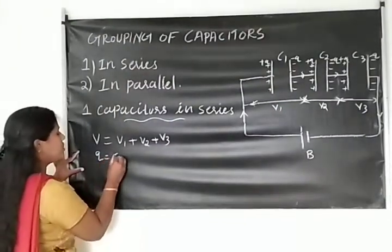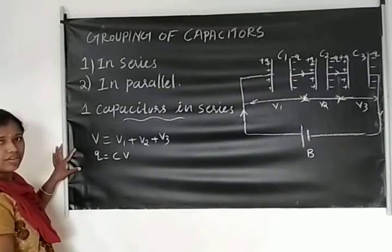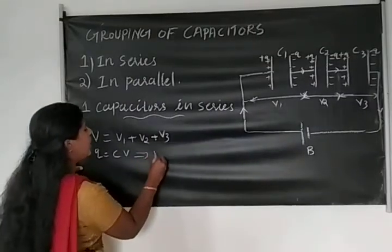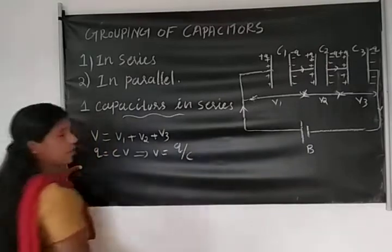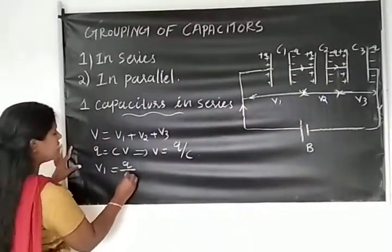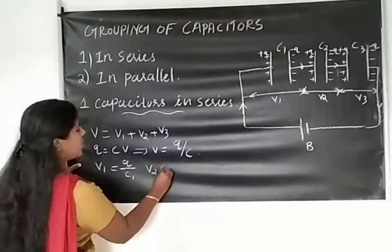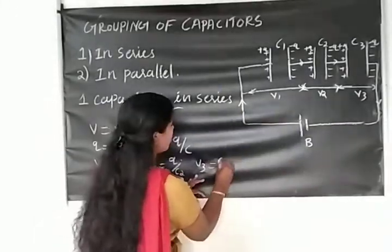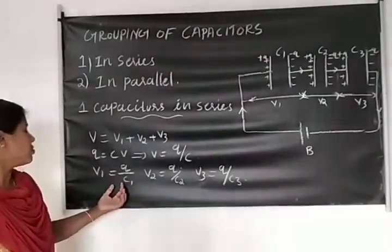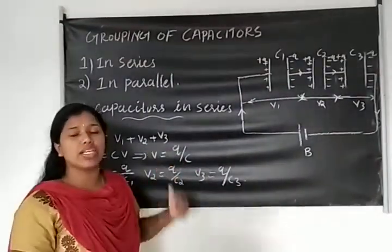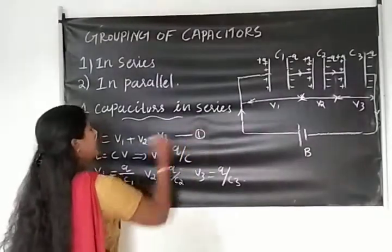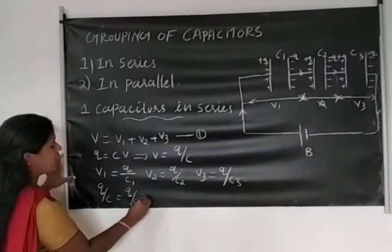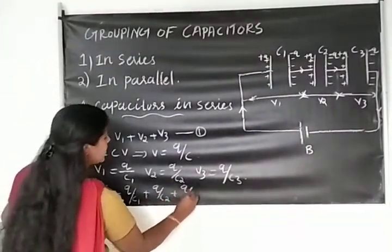We already know that Q is equal to CV, which means capacitance multiplied by potential difference. From this equation we can write V equal to Q by C. Then V1 is equal to Q by C1, V2 is equal to Q by C2, and V3 is equal to Q by C3. We can substitute V1, V2, V3 into the main equation: Q by C equals Q by C1 plus Q by C2 plus Q by C3.